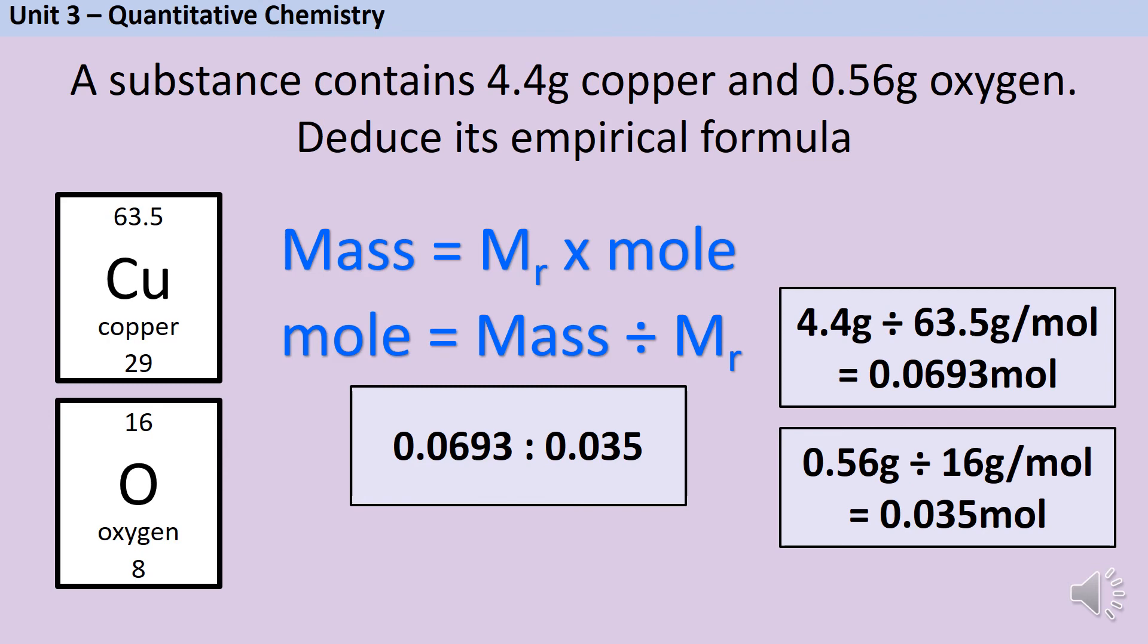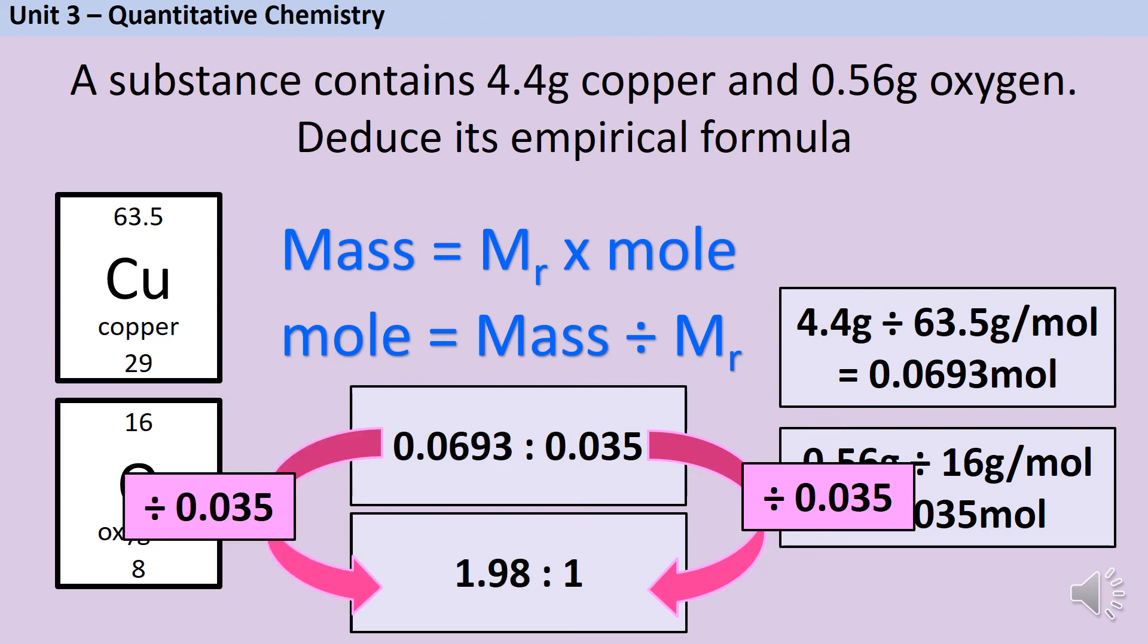I divide both sides by the smaller number. 0.035 divided by itself is of course 1, and then if I divide the other side I get 1.98. Now that is close enough that it's okay for you to just round to the nearest integer and this is really common with empirical formulae questions. As a general rule of thumb, if you're within about 0.05 of an integer that is close enough that you're fine to round it. So here we're going to call this 2 copper to 1 oxygen and the empirical formula is Cu2O.